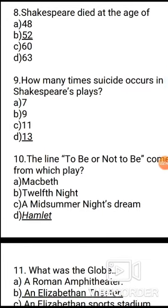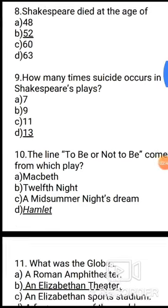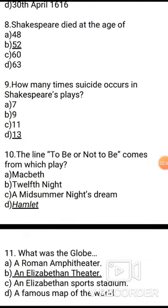Question 10: The line 'To be or not to be' comes from which play? Options: A. Macbeth, B. Twelfth Night, C. A Midsummer Night's Dream, D. Hamlet. The correct answer is Hamlet. The line 'To be or not to be' is taken from the play Hamlet.